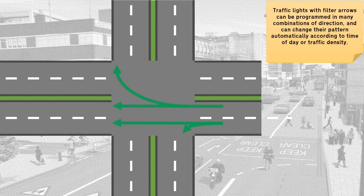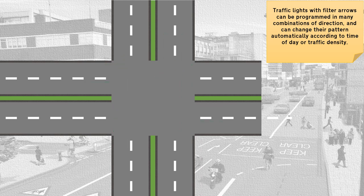Traffic lights with filter arrows can be programmed in many combinations of direction, and can change their pattern automatically according to time of day or traffic density.